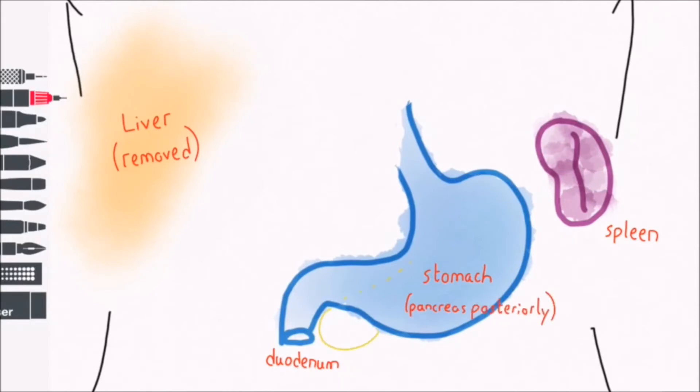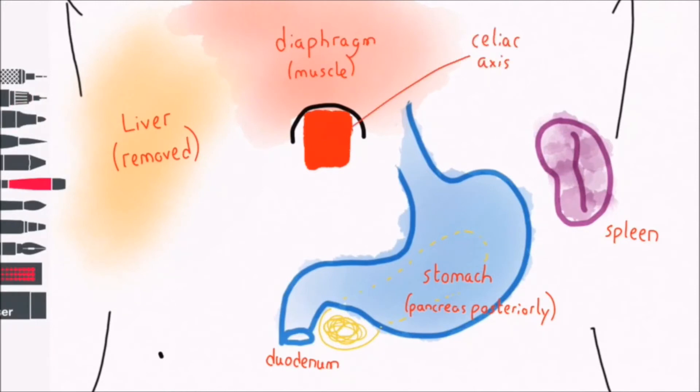The diaphragm muscle is here. Emerging from it at T12 from the abdominal aorta at the aortic hiatus is the celiac trunk. It's the first branch of the abdominal aorta and it has three branches.